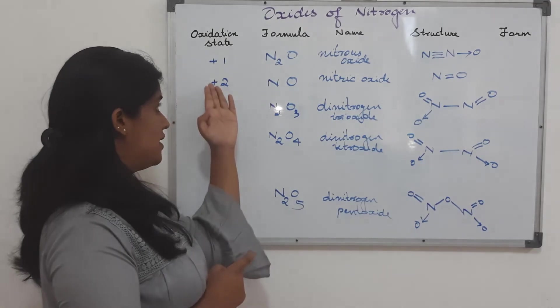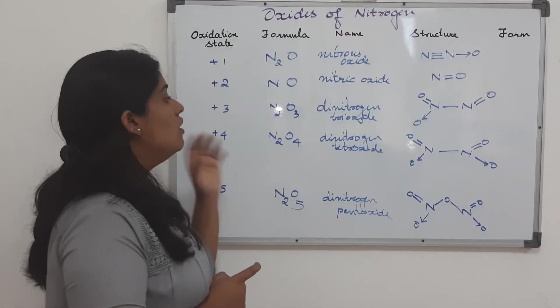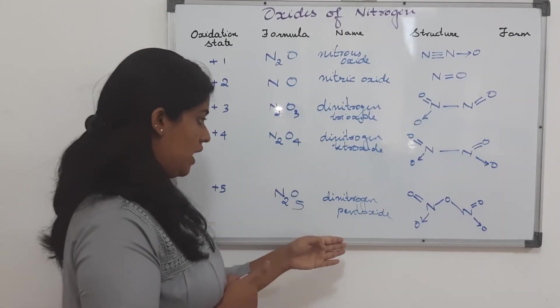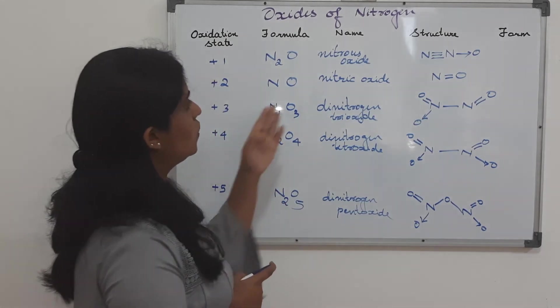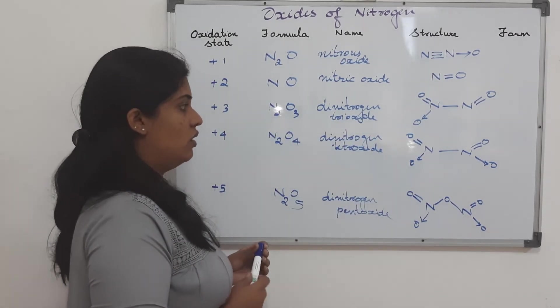So, these are the structures. Very easily, from their oxidation state, we can write their formula. From the formulas, we can easily write their names. And from the names, we can go to their chemical structures.